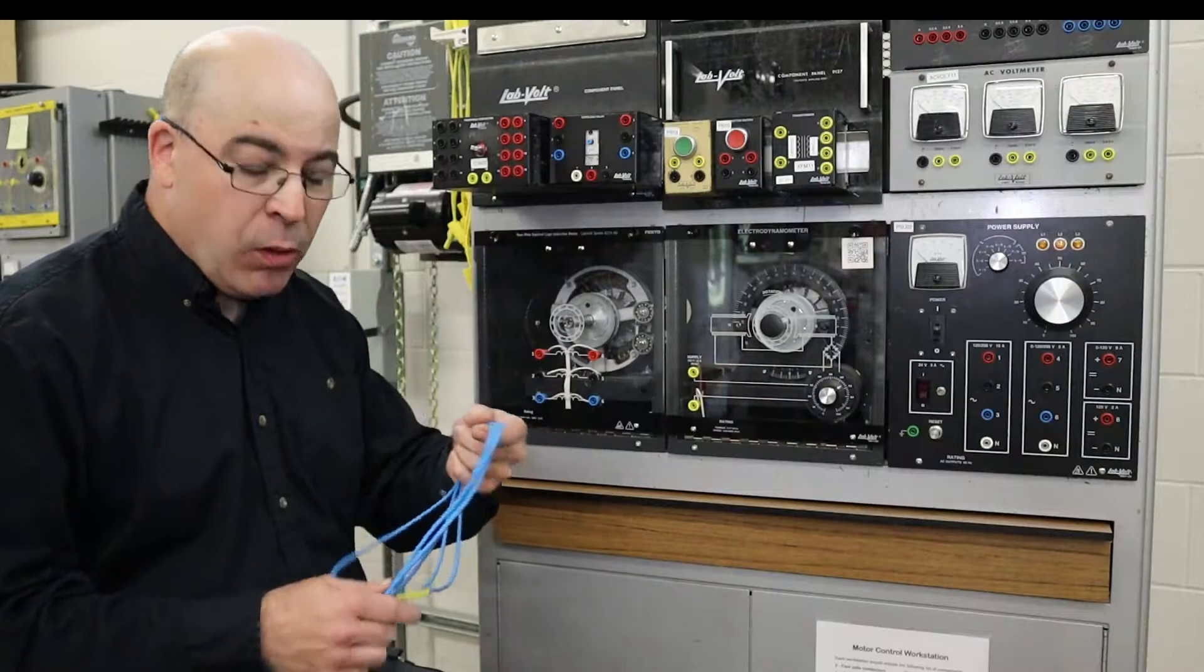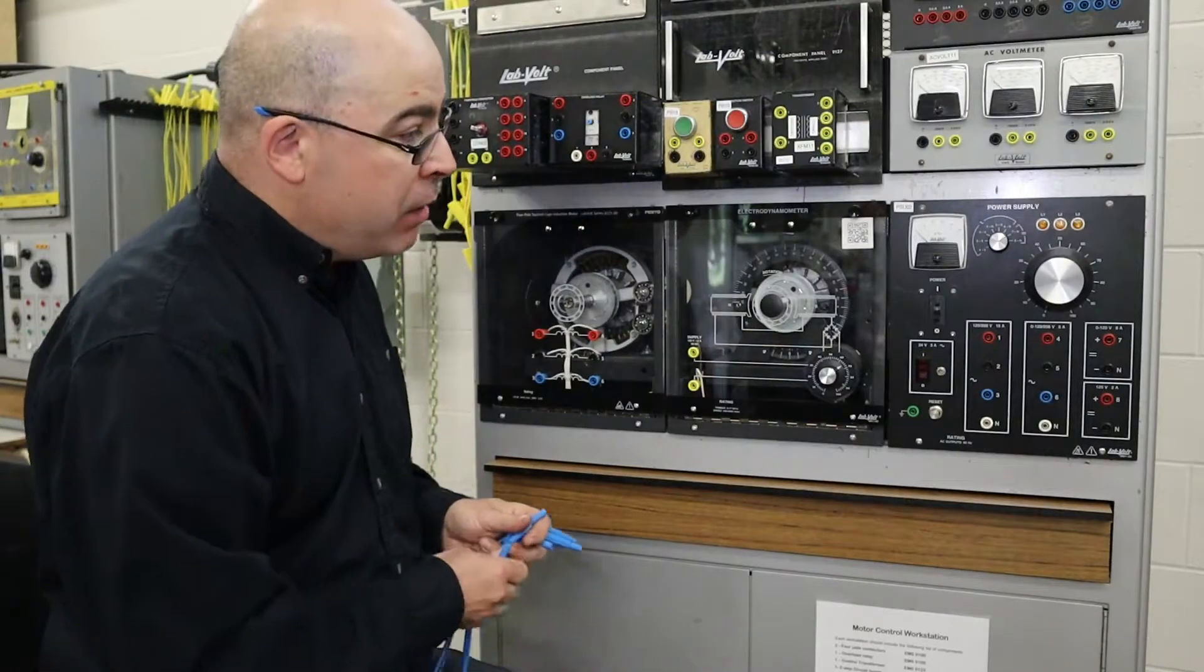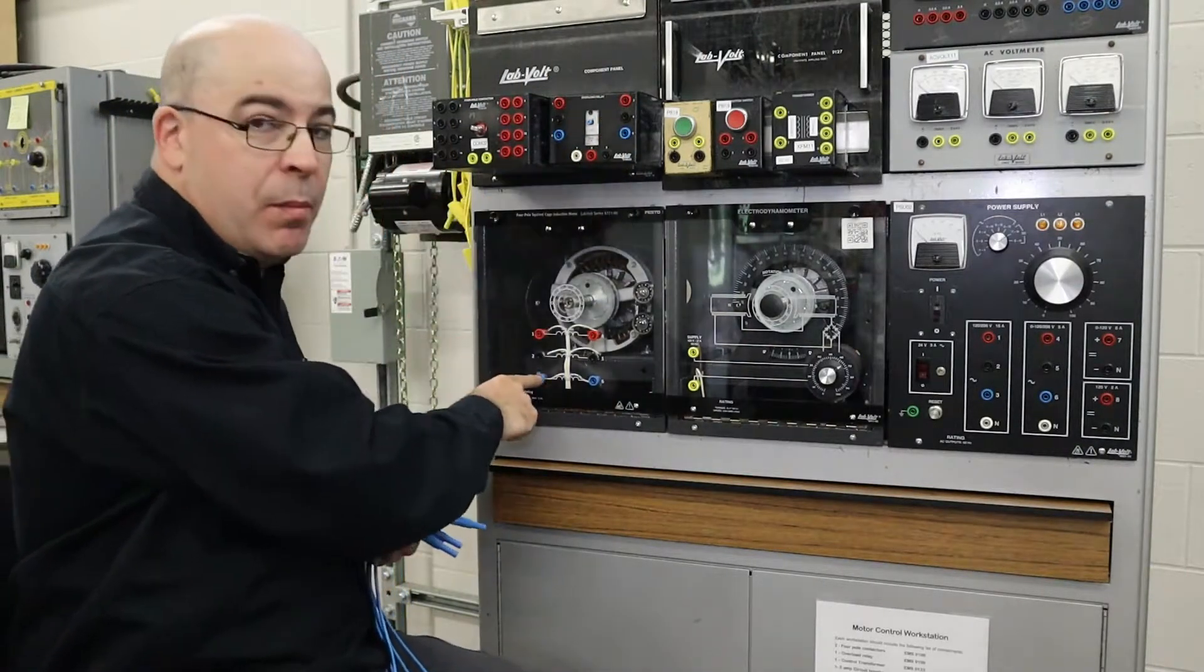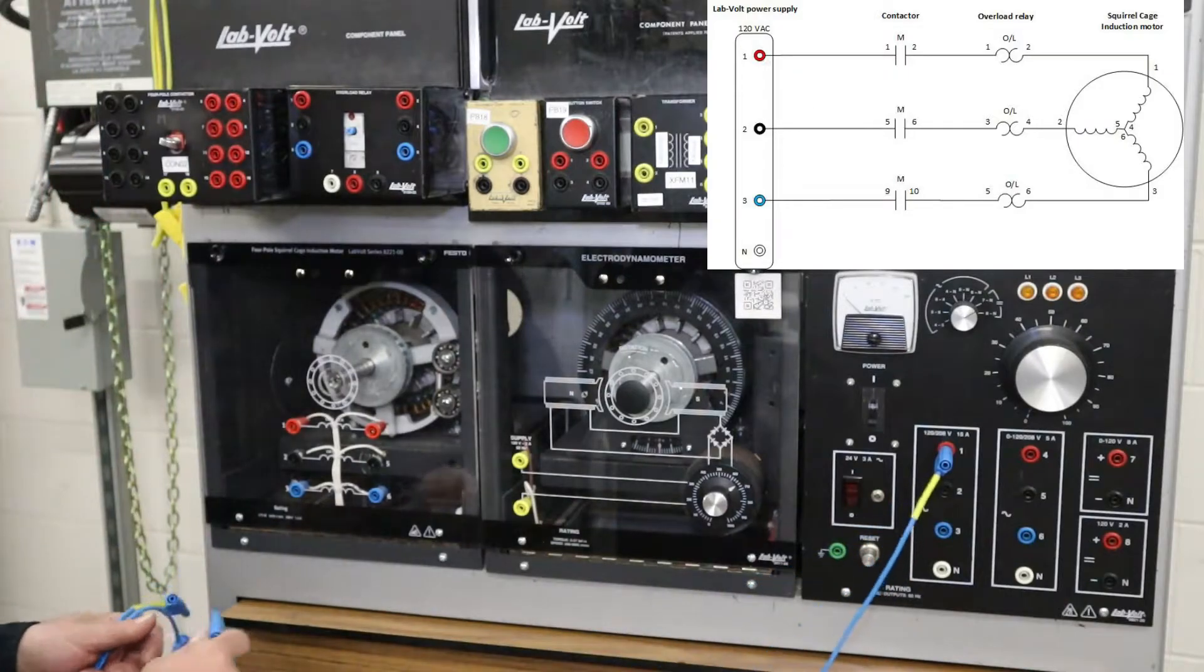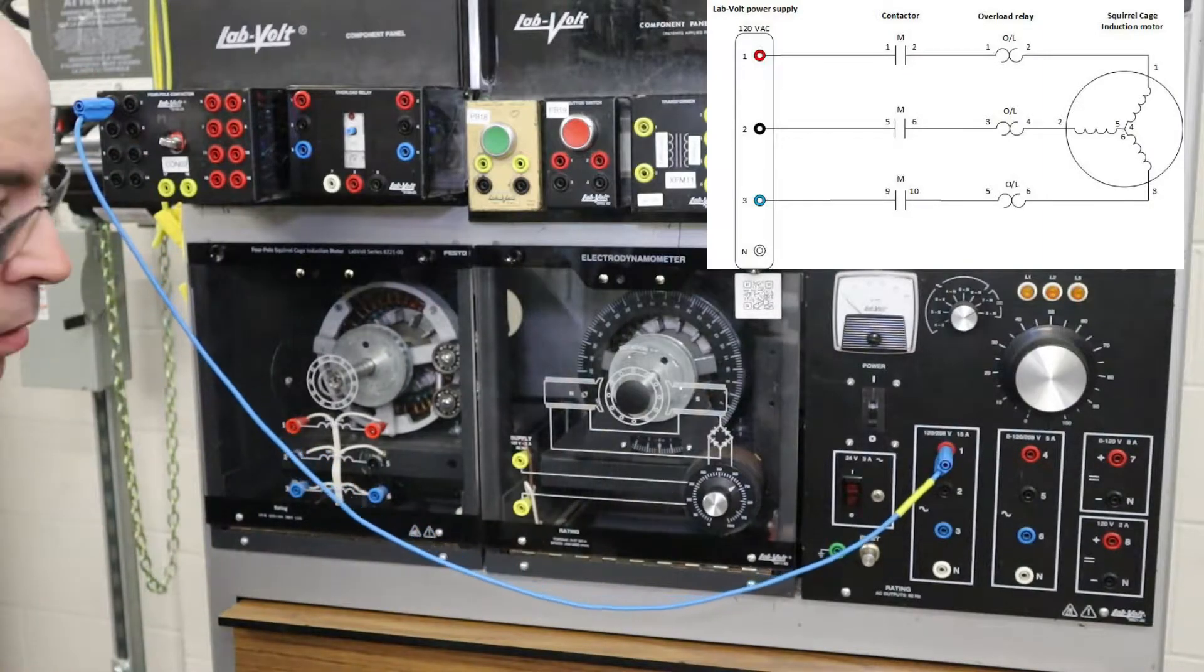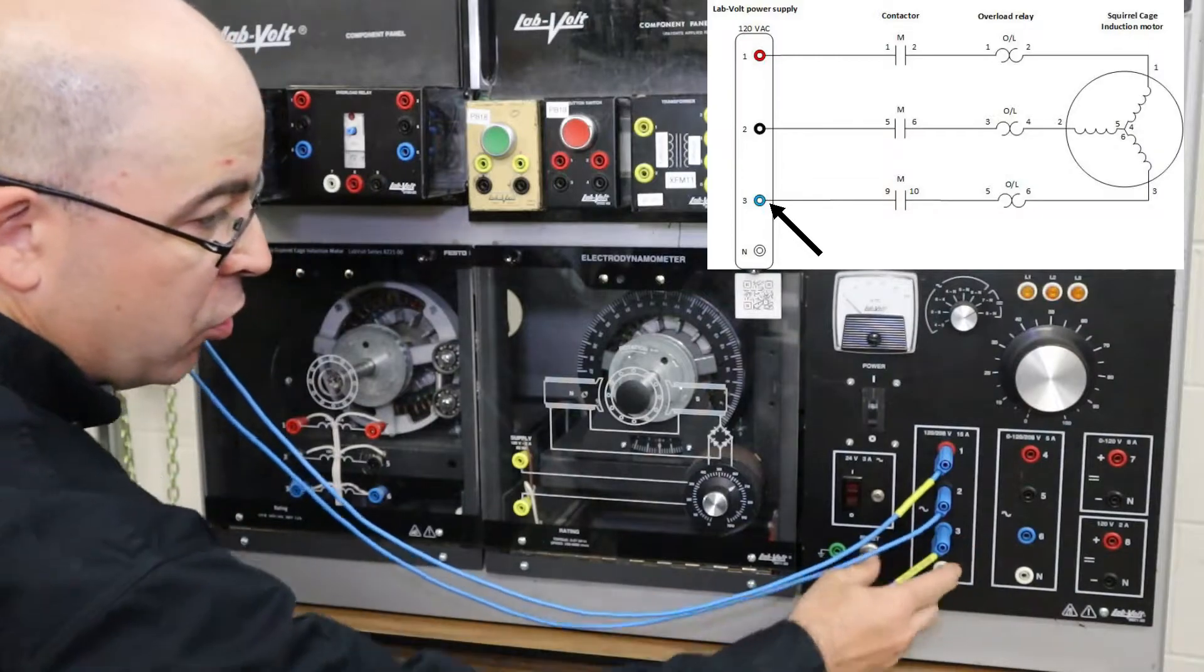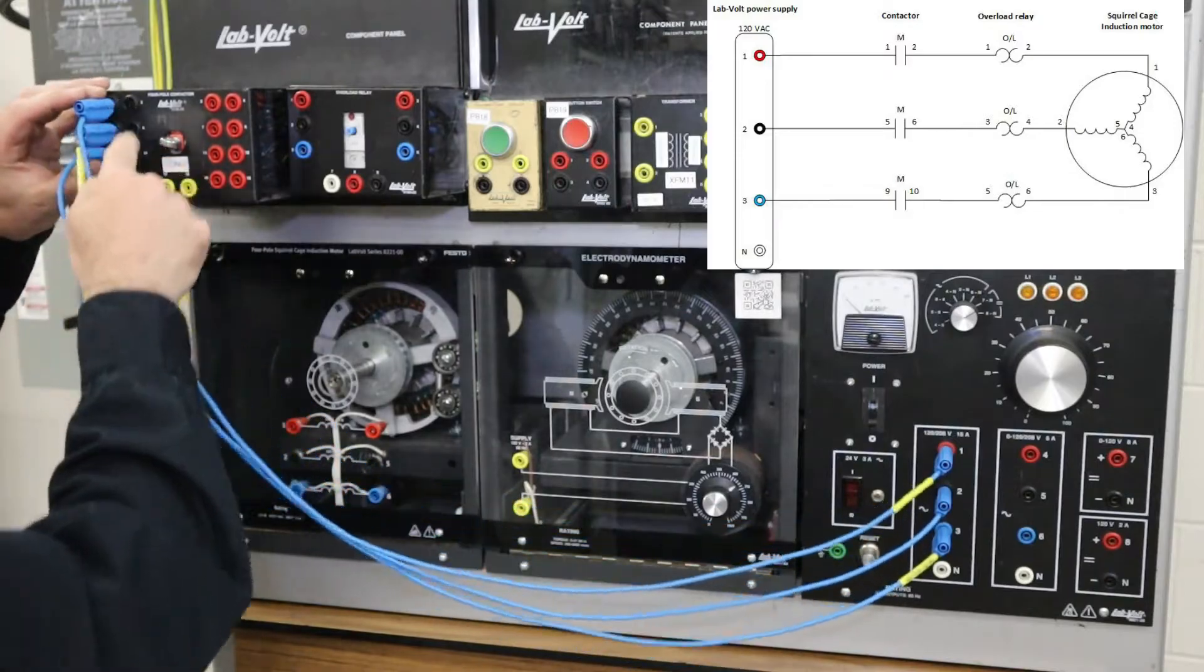First, we're going to get started with some blue test leads. We're going to run from the power supply to the contactor, from the contactor to the overload relay, and the overload relay to the motor. We're going from terminal one to the first contact, number one, then terminal two to the second normally open contact - terminal five - and terminal three from the power supply to terminal nine, so that there are three normally open contacts.